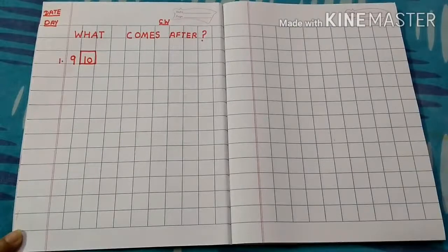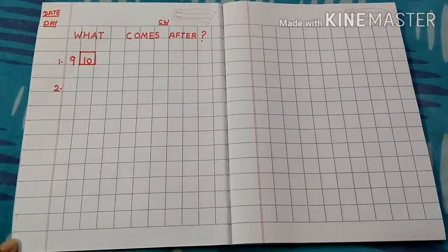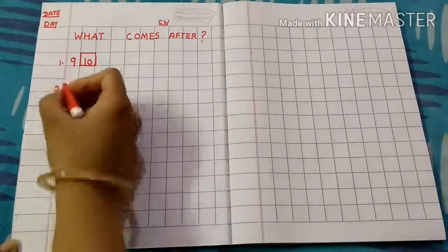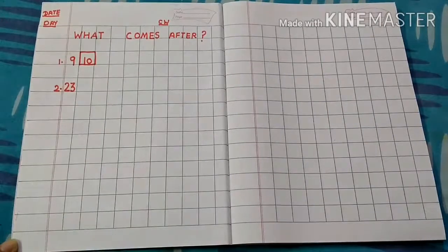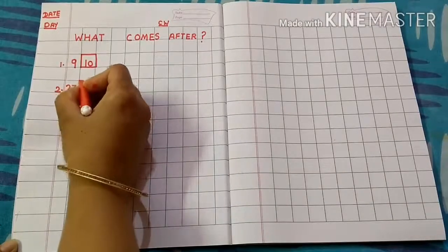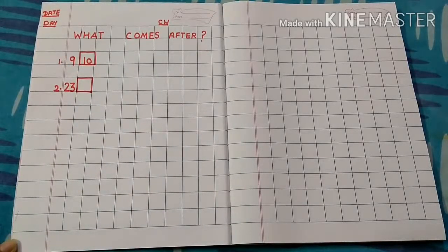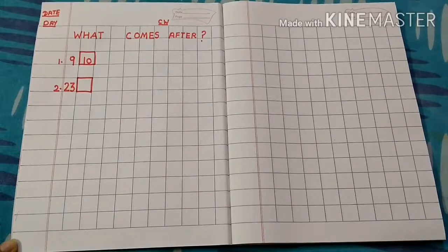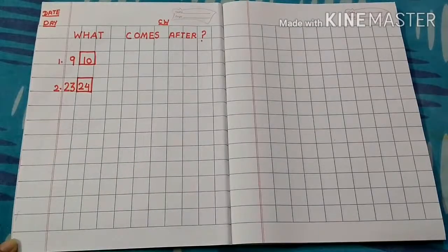Now next question. Leave a line and write the second number: 23. Make a box, and then we have to tell what number comes after 23. Do the counting: 21, 22, 23 — and the next number that comes after 23 is 24. So 24 is our answer.